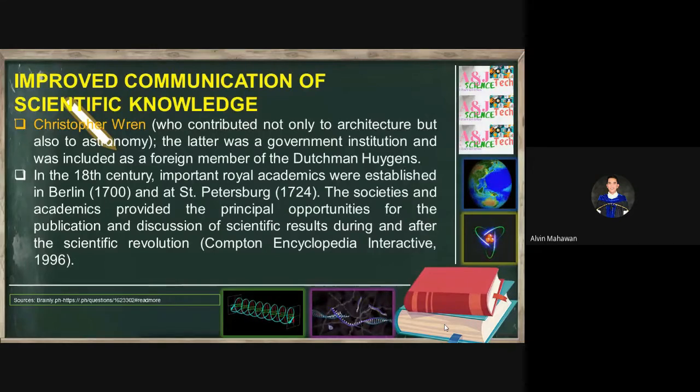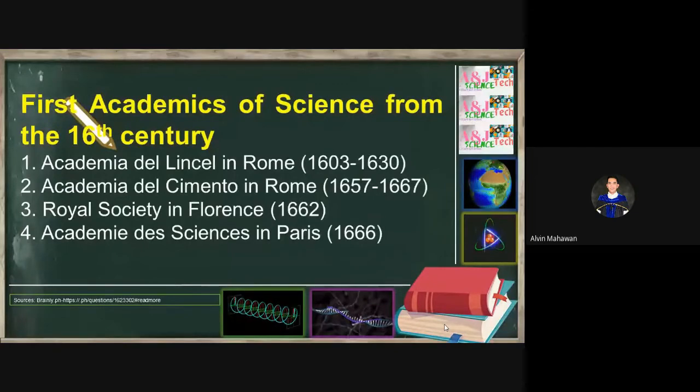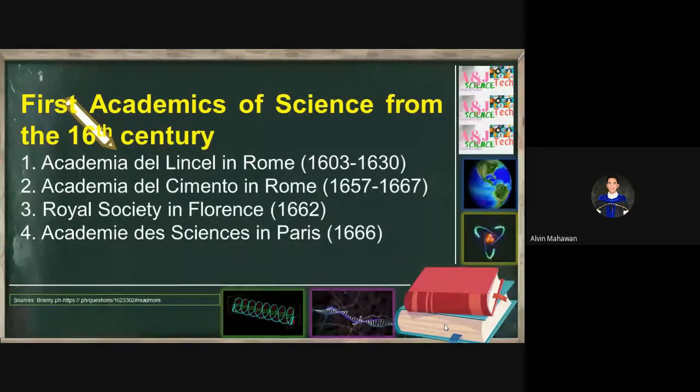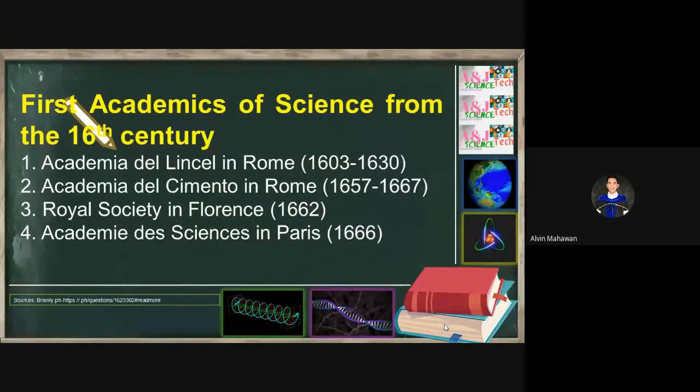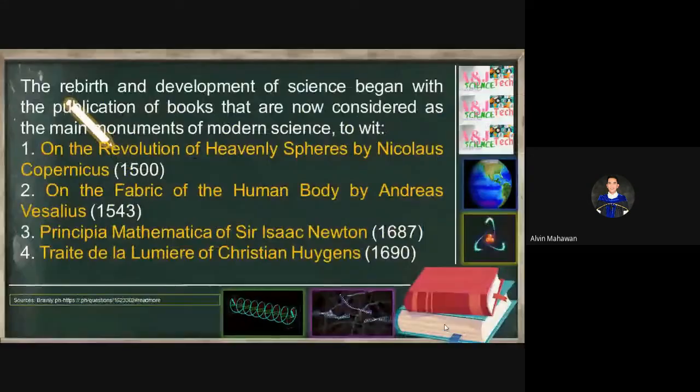In the eighteenth century, important Royal academies were established in Berlin and St. Petersburg. The societies and academies provided the principal opportunities for the publication and discussion of scientific results during and after the scientific revolution. Let's have the first academies of science from the sixteenth century. These are the well-known academia or schools: Academia del Lancelot in Rome, Academia del Cimento in Rome, the Royal Society in Florence, the Academia de Sciences in Paris. These are the first established academies in the rise during the sixteenth century.